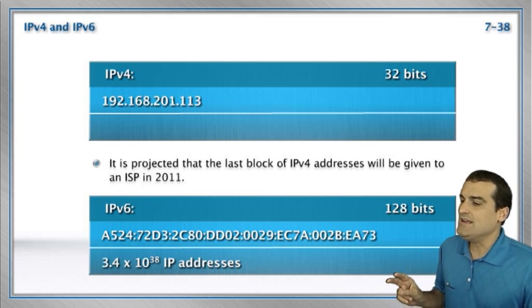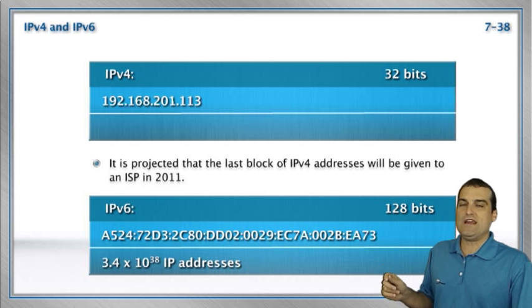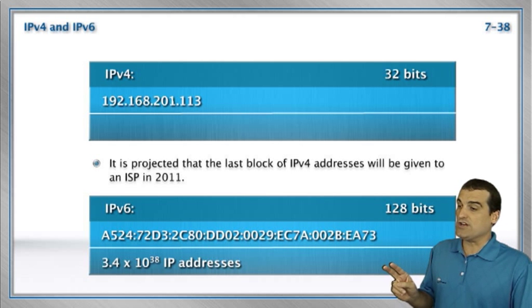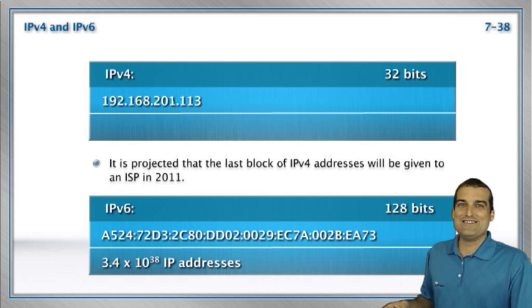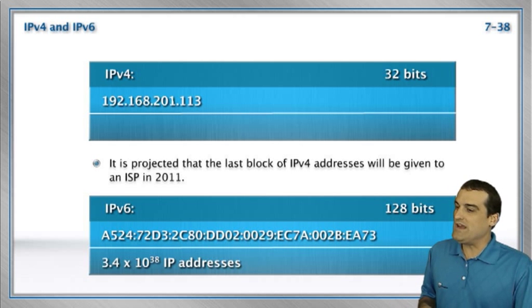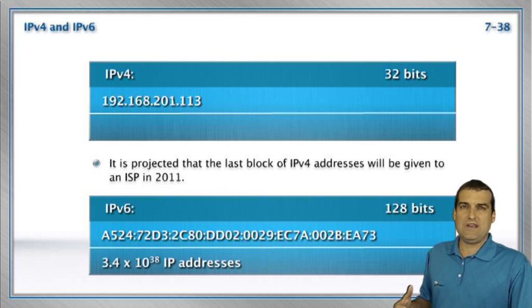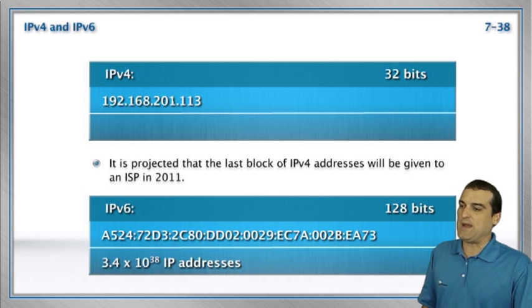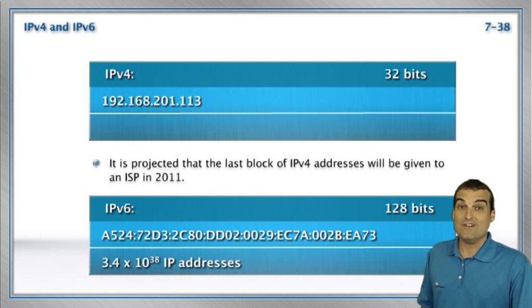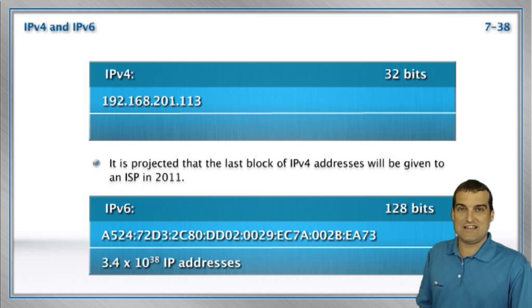As a CCNA, you're going to need to know about tricks we can do with the representation of these addresses to make them more convenient, and we'll cover that in the next video. For right now, all you need to realize is that we've got 32 bits in our IPv4 address, and to accommodate the many more addresses we'll need, IPv6 will have an address space 128 bits in length, represented in hexadecimal. That's all you need to master from a certification perspective from this particular video.